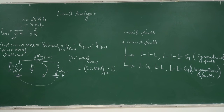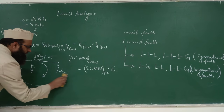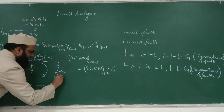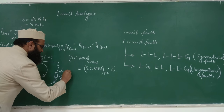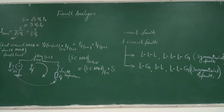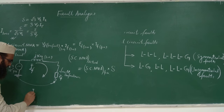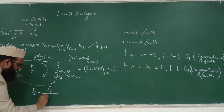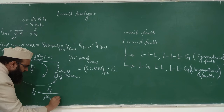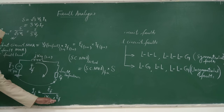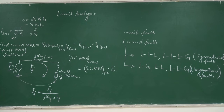One more thing: if a fault impedance Z_F is given, it appears in series at the fault point. In that case, the fault current becomes IF = EF per unit / (j·X_eq + Z_F). If fault impedance is not given, put zero and we get the same result as before.